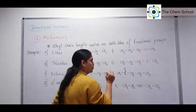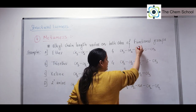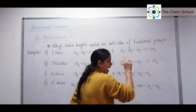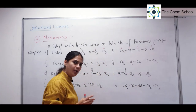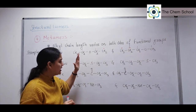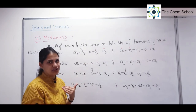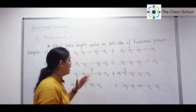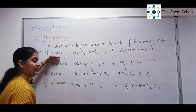In the next example, on the left-hand side of the oxygen, one, two, and three carbons are present, and on the right-hand side, only one carbon is present. So in these two examples, the number of carbons on both sides of the functional group has changed.